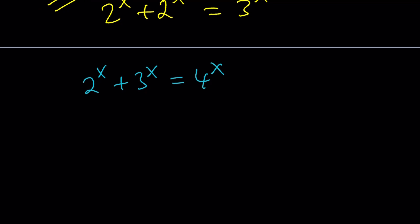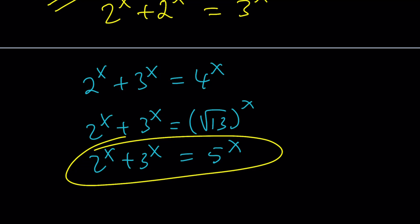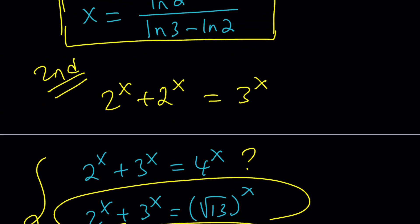like 2^x + 3^x = 4^x, could we still solve this problem, right? That would be a good question, don't you think? Or, if we had something like 2^x + 3^x = √13^x, or 2^x + 3^x = 5^x. Obviously, this would be pretty easy, right? Because 2 + 3 is equal to 5. And I believe I made a short on this one. And the second one should also be easy if you really think about it.